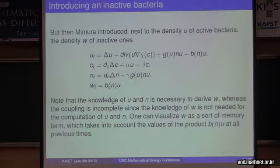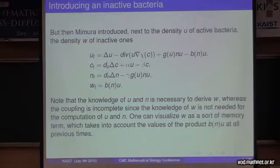Then, Mimura introduces one more species. u is the active bacteria, which introduces a density w of inactive bacteria, which are defined by the equation w_t equals b of nu. Now we have our complete system. We need the knowledge of u, c, and n to compute w, but you don't need the knowledge of w to compute the other unknowns, so it's not really a coupled system.